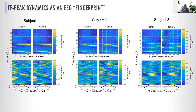What we see is exceptionally strong night-to-night consistency, but very strong inter-subject variability. Here are three different subjects — the power histogram and phase histogram from night one, and the same for night two — showing remarkable reproducibility within subjects across nights. I think this has great promise not only as an EEG fingerprint, but as a way of very concisely describing the activity of thousands of oscillatory events over the course of sleep on both large and small time scales.